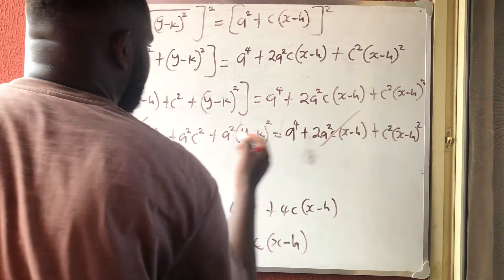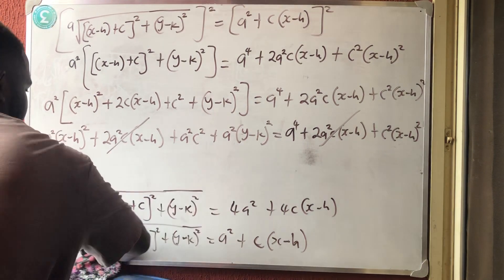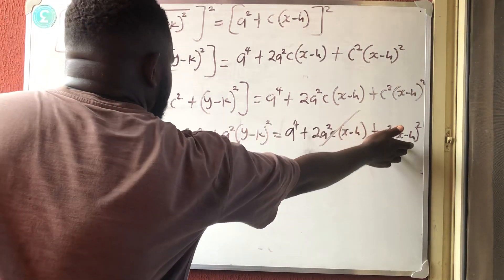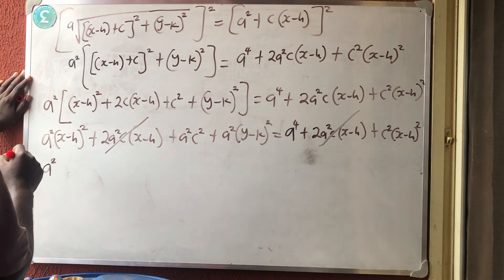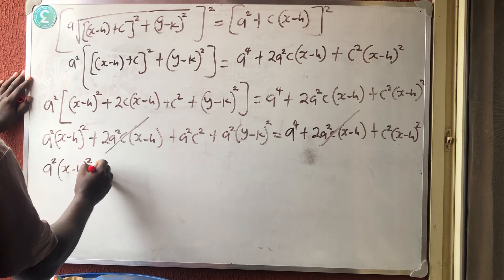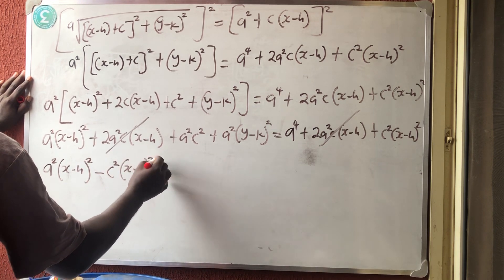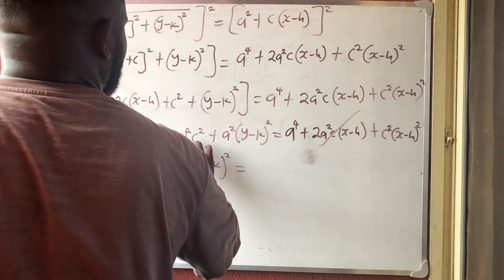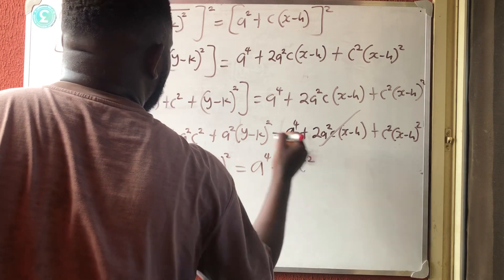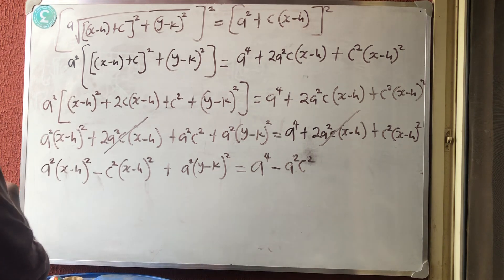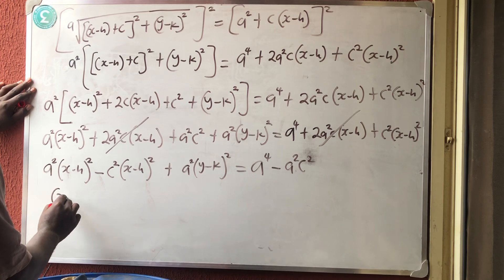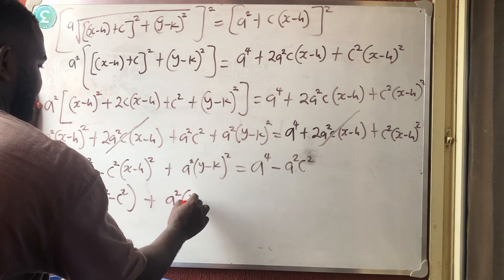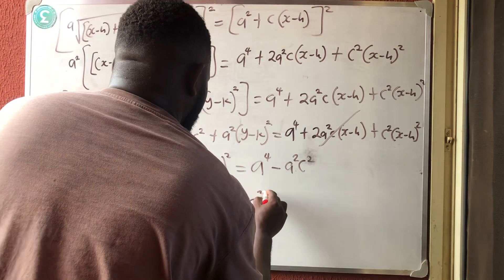The 2A²C(X − H) terms cancel from both sides. Bringing all variable terms to one side: A²(X − H)² − C²(X − H)² + A²(Y − K)² equals A⁴ − A²C². Factoring: (A² − C²)(X − H)² + A²(Y − K)² equals A²(A² − C²).